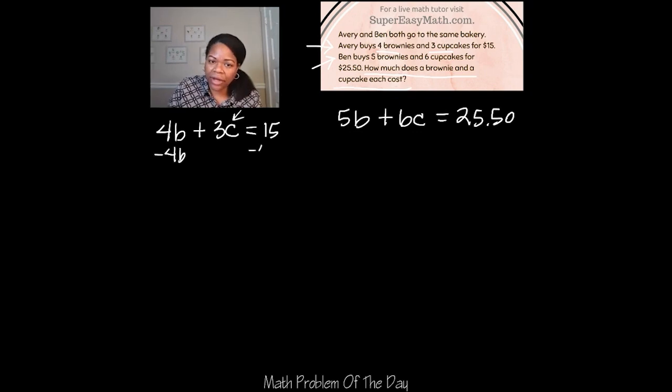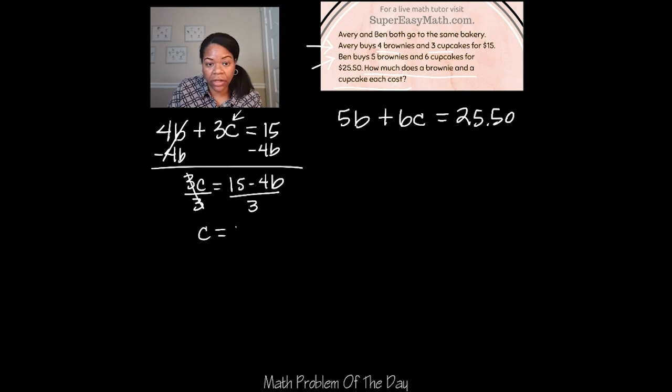So subtract 4B, subtract 4B, get rid of this. I have 3C equals 15 minus 4B. Okay, divide by 3, divide by 3, get rid of this. We have C equals what's 15 divided by 3? 5. And then over here the 4 divided by 3 can't really be simplified so I'm just going to leave that as a fraction. And then we have B.